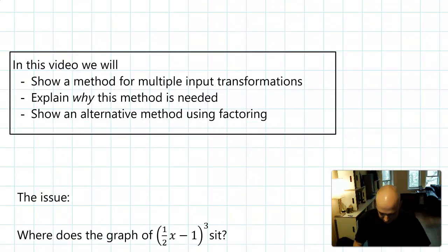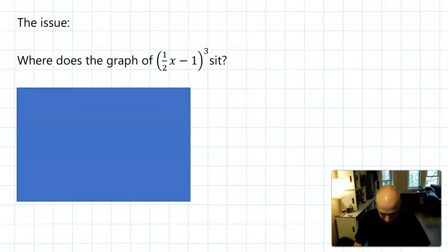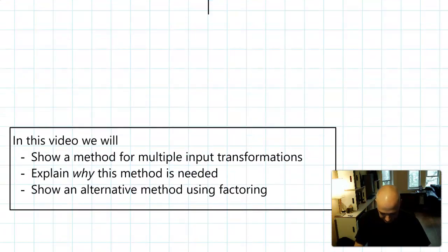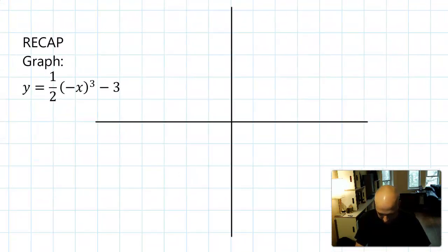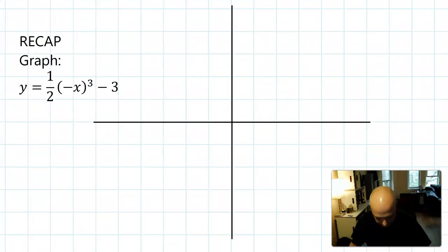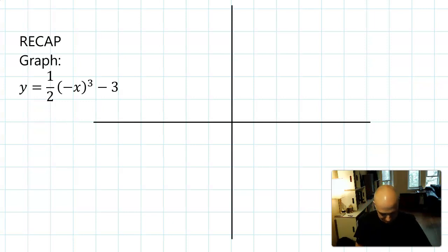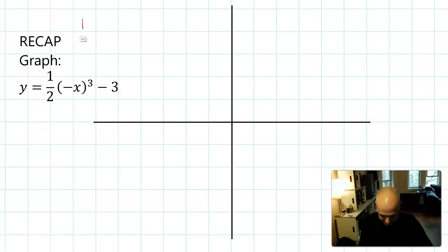As a quick recap of what we expect you to be able to do, let's do a quick recap and graph one half negative X to the third minus three.